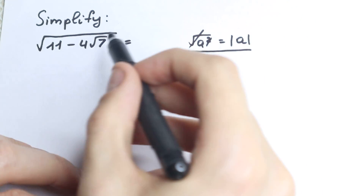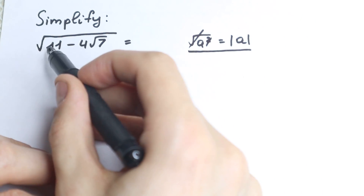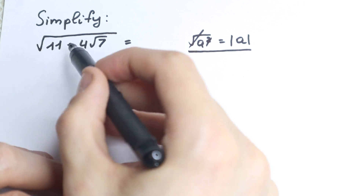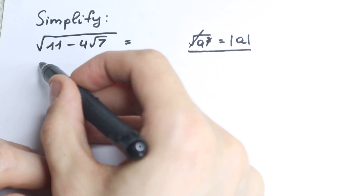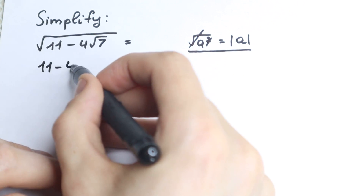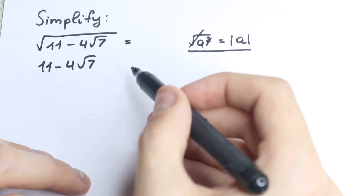In other words, let's try to create a perfect square inside the square root. So we look at 11 minus 4 square root of 7 and ask how we can rewrite it as something squared.